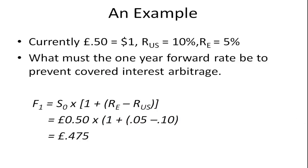Let's look at an example. Suppose currently £0.50 equals $1, so the exchange rate is £0.50 per US dollar. Suppose the interest rate in the US is 10% and the interest rate in England is 5%. What must the one-year forward rate be to prevent covered interest arbitrage?